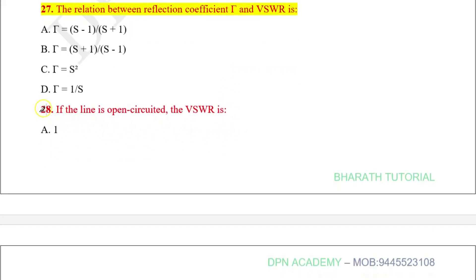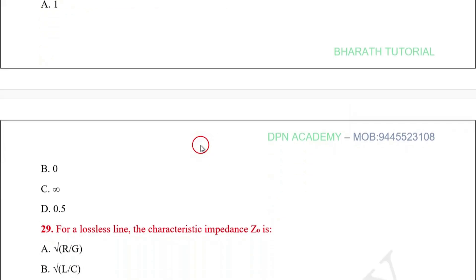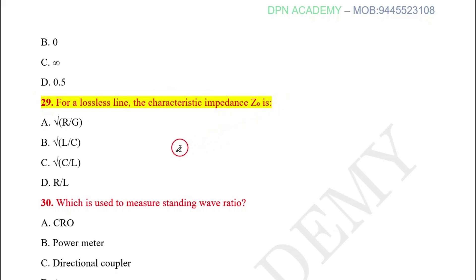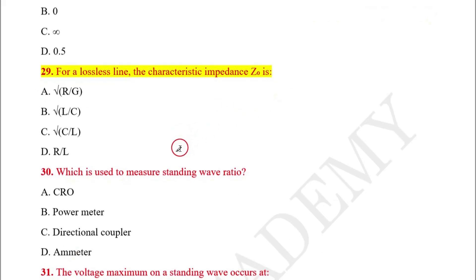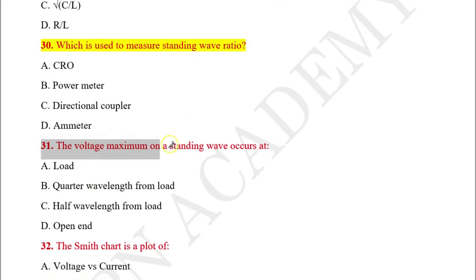Question number twenty-eight: If the line is open circuit, the VSWR is? Question number twenty-nine: For a lossless line, the characteristic impedance is? Question number thirty: Which instrument is used to measure standing wave ratio? Question number thirty-one: The voltage maximum on a standing wave occurs at — this is the most important.